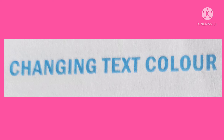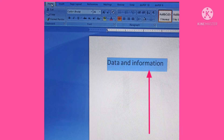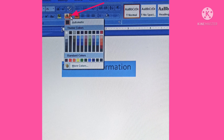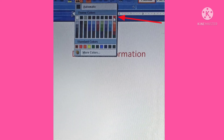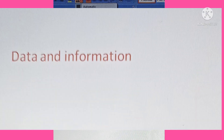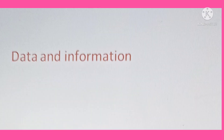The next topic is changing text color. Microsoft Word provides an option to change the color of the text. To change the color of the text, first select the text and click on the Home tab. Now click on the drop-down arrow next to the font color button in the font group and select the desired color from the displayed font color menu. In this way we can change the color of the text.